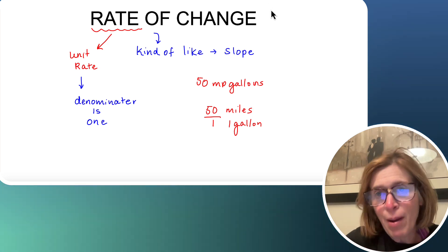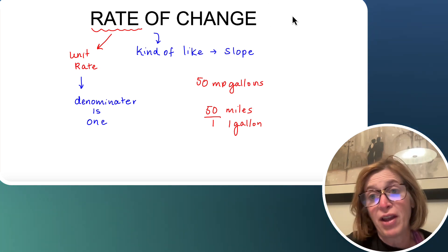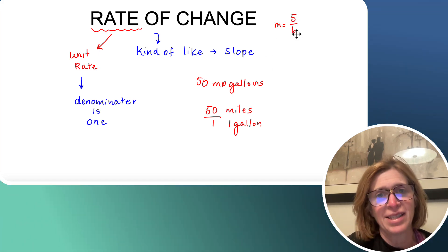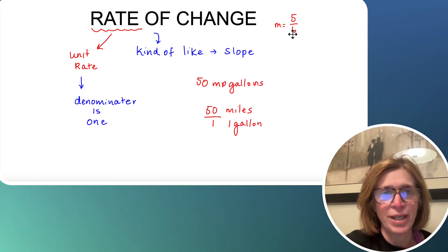But with slope, remember in slope, you can get a slope of like five over six, right? That would not be a rate of change. You'd want to convert it so that it has a denominator of one.